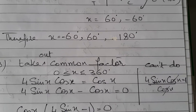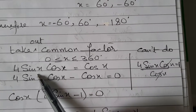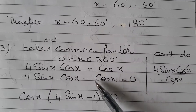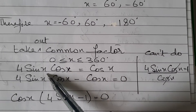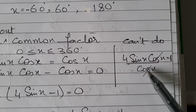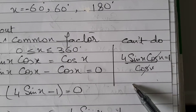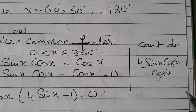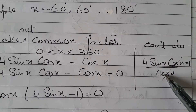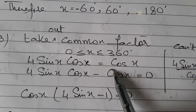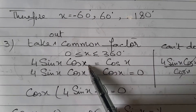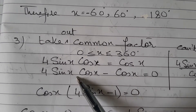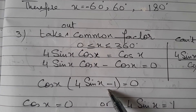Now let's take the third case where we take out a common factor. I took the example 4 sin x cos x = cos x with the range 0 to 360°. Most students take cos x to the other side and cancel it out, getting 4 sin x = 1 and sin x = 1/4. You cannot do this — by dividing, you eliminate one of the answers, and cos x could be 0. You cannot divide a number by 0. Instead, take cos x to this side, take it out as a common factor, and what is left is: cos x(4 sin x − 1) = 0.